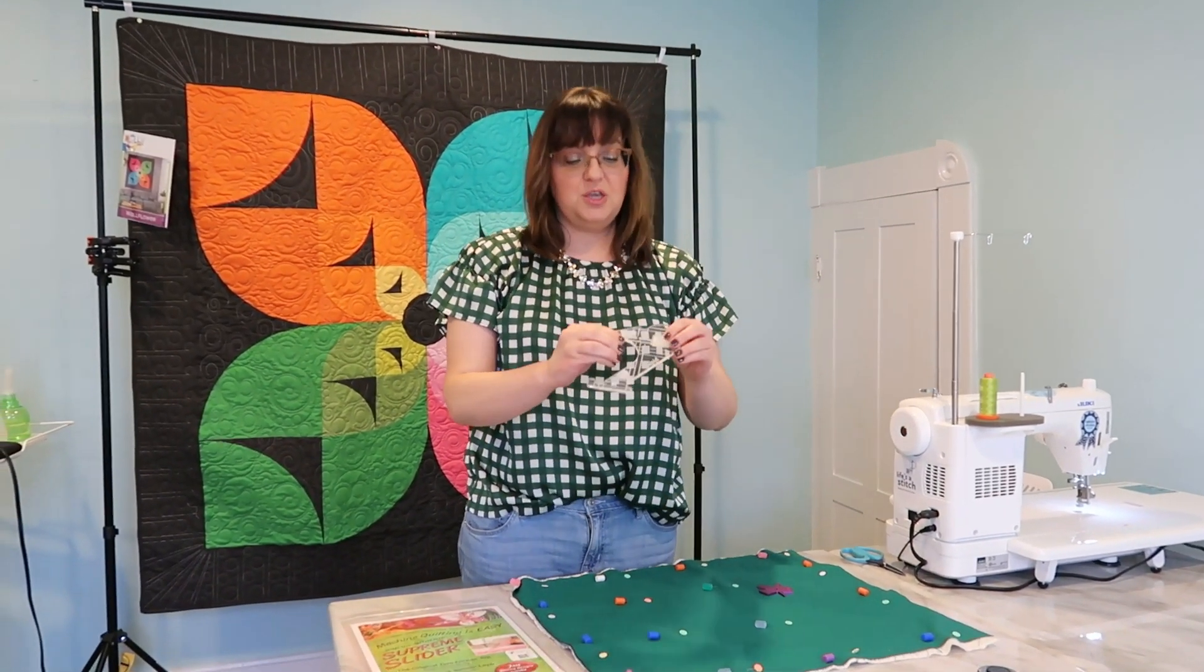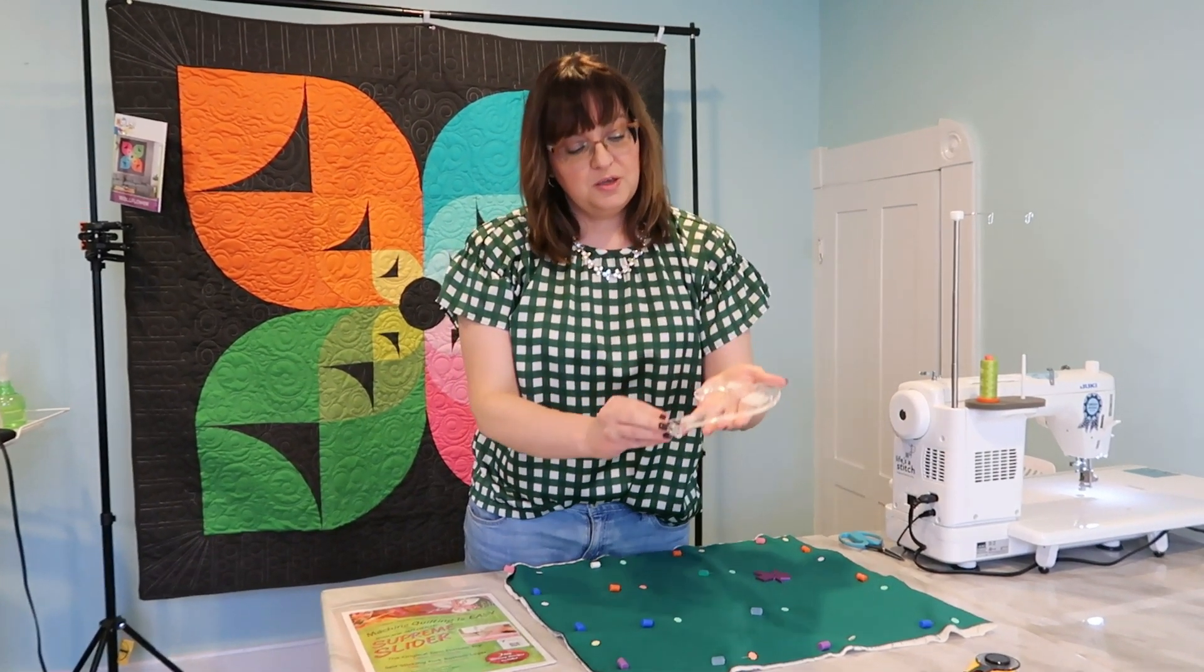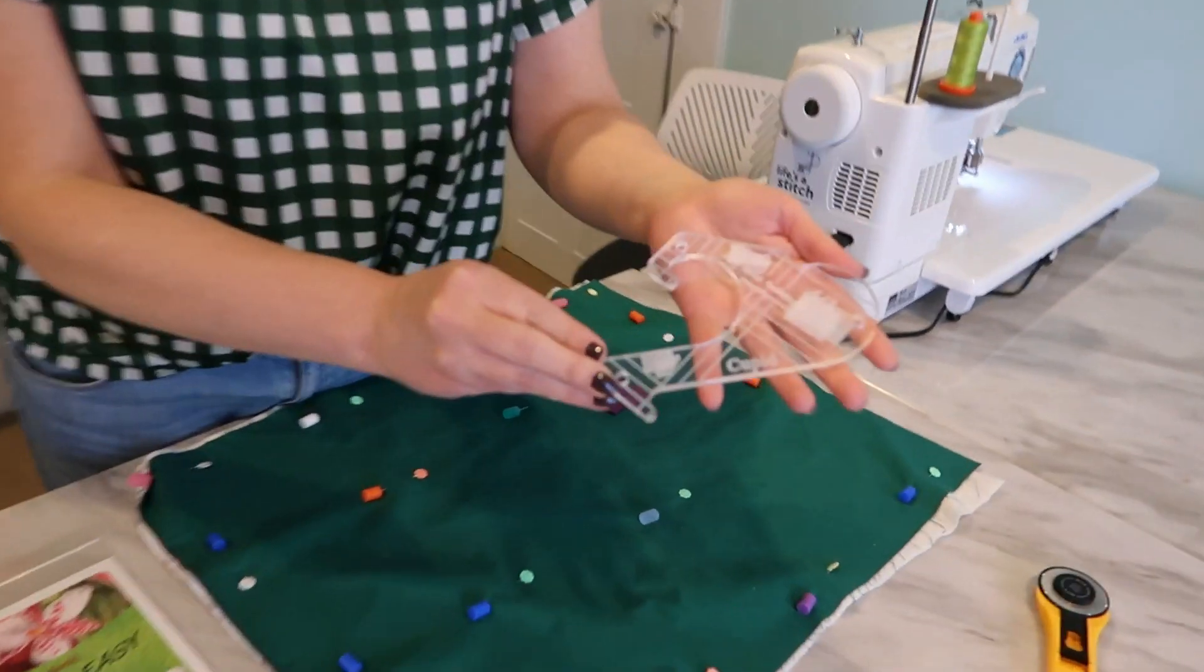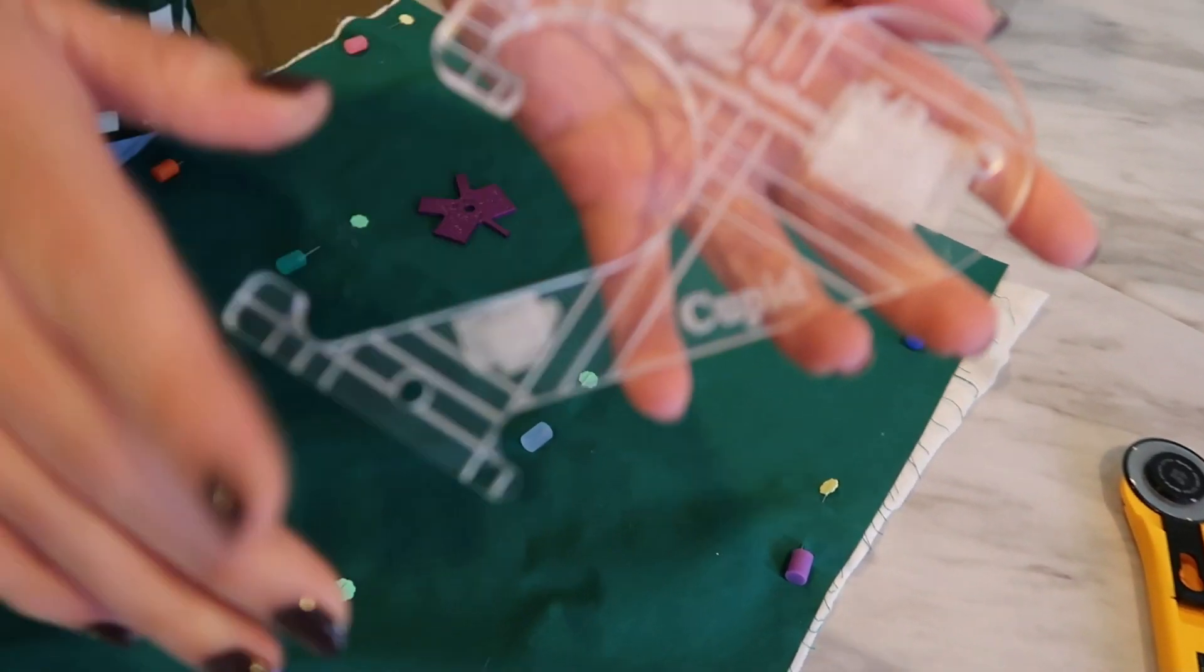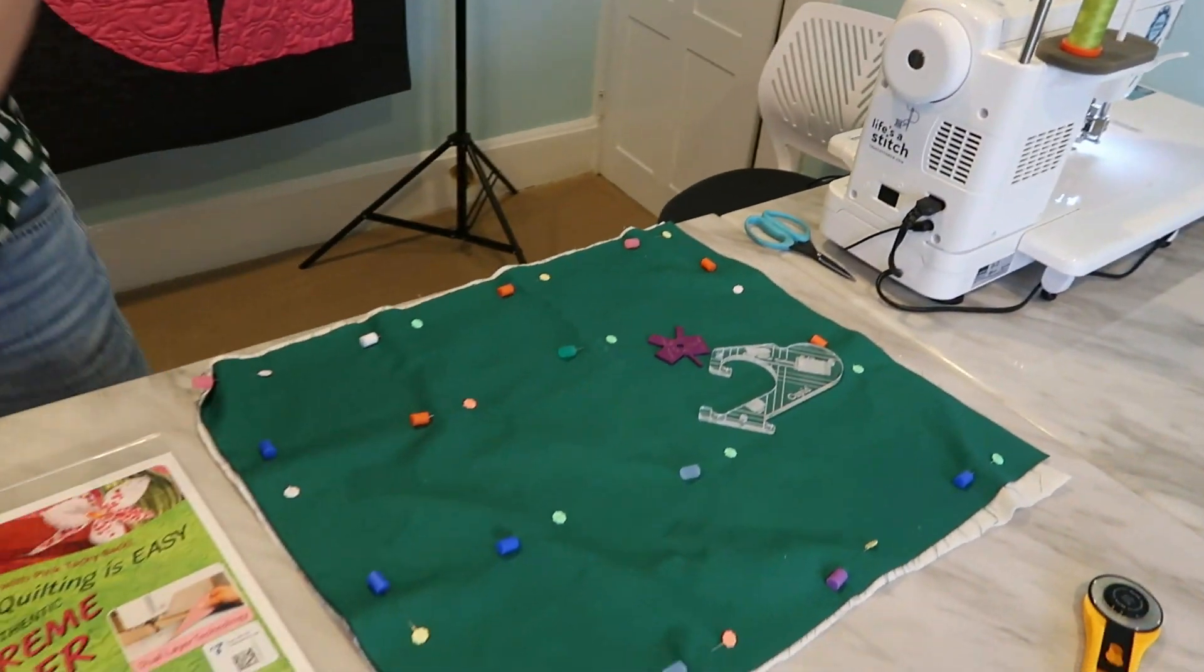We're going to use the Cupid—I'm using the five-three Cupid from Silly Moon Quilting Rulers. This makes little hearts and then we'll put three of these little hearts together to make cute little shamrocks.